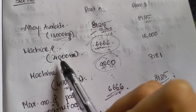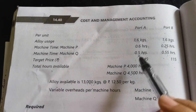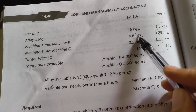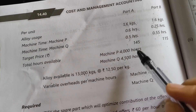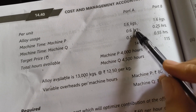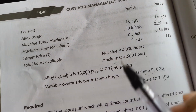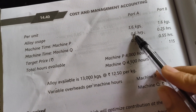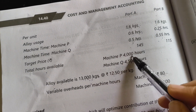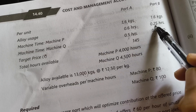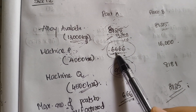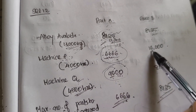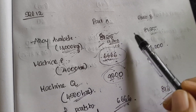Next, machine P. The total machine P hours available is 4,000 hours. To make part A, 0.6 hours per unit is required, so 4,000 divided by 0.6 gives 6,666 units. For part B, machine P requires 0.25 hours per unit, so 4,000 divided by 0.25 gives 16,000 units that can be produced using the available machine P hours.